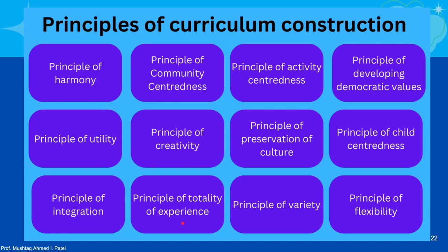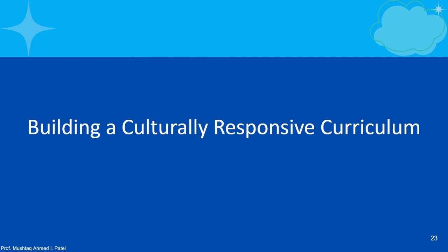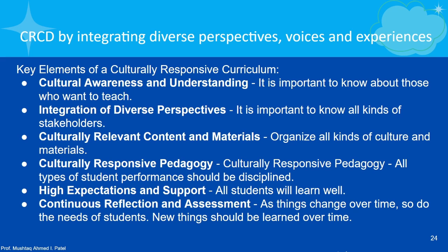Principle of totality of experience — not only academic values have to be developed, but other values also have to be addressed. Variety should be there — only one kind of experience should not be there. Flexibility — few things can be achieved now, few things can be achieved later. Building a culturally responsive curriculum requires cultural awareness and understanding. At the national level, they prescribe curriculum and say you can take this as a building block and modify it at the state level, so that cultural awareness and understanding component is put into that.